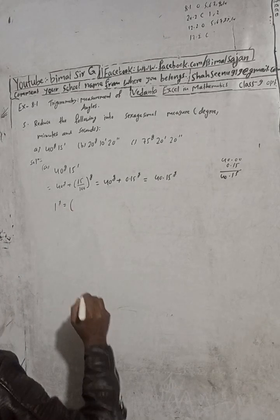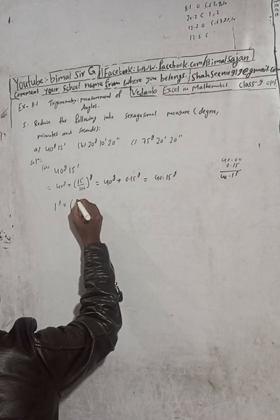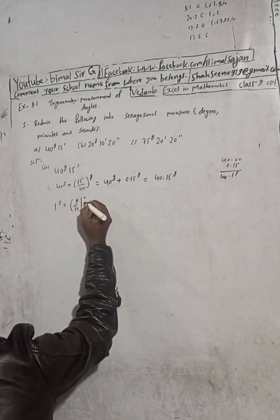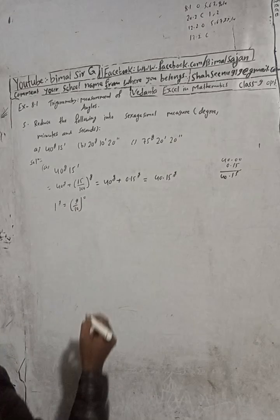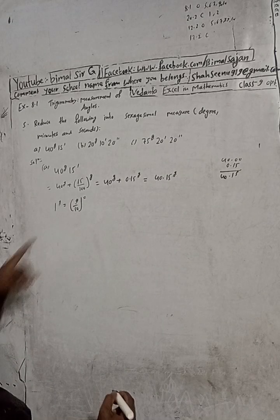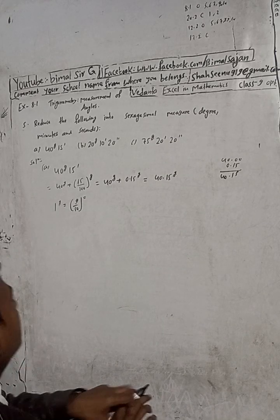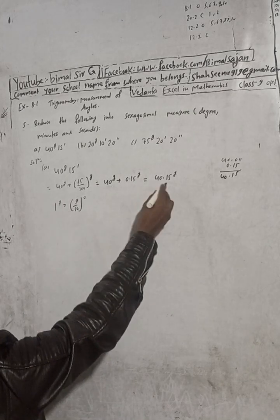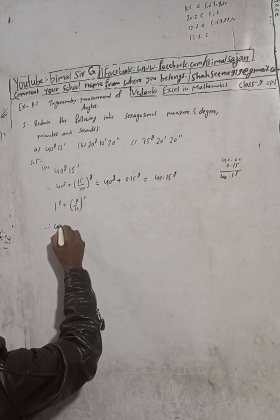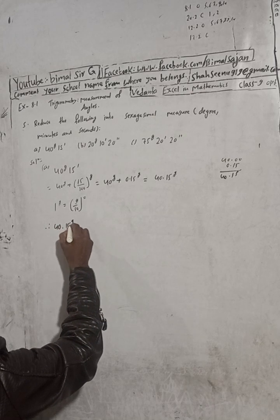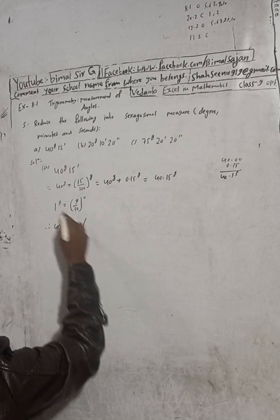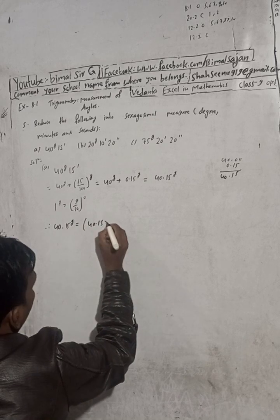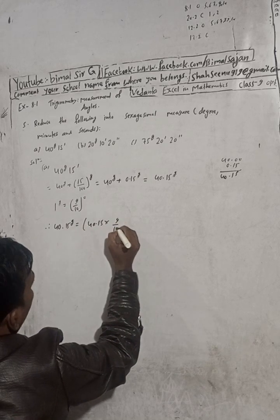The formula is: 1 grade equals 9 by 10 degrees. So we use the formula with 40.15 degrees. Then the formula is 9 by 10.